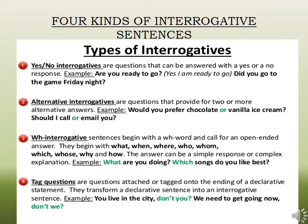The last type of interrogative is tag questions. These are questions formed by adding an interrogative tag at the end of a declarative or imperative statement. For example, 'Mrs. Lal is your class teacher' is the declarative sentence, and the question tag added is 'isn't she?' Another example: 'We need to get going now' — the question tag would be 'don't we?'